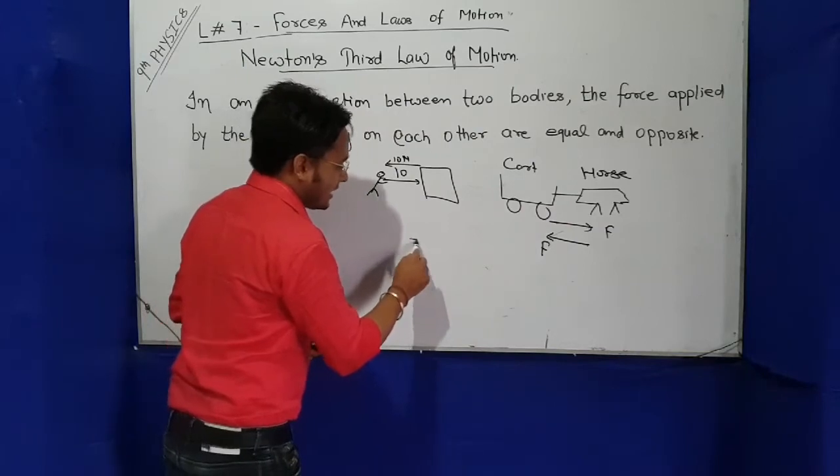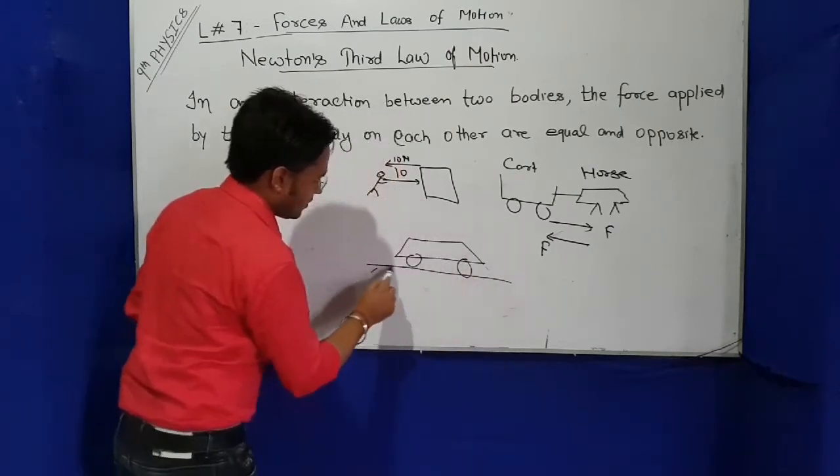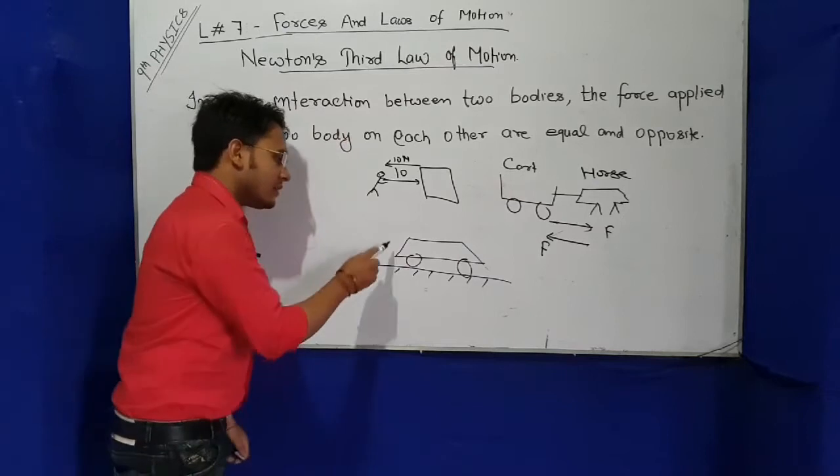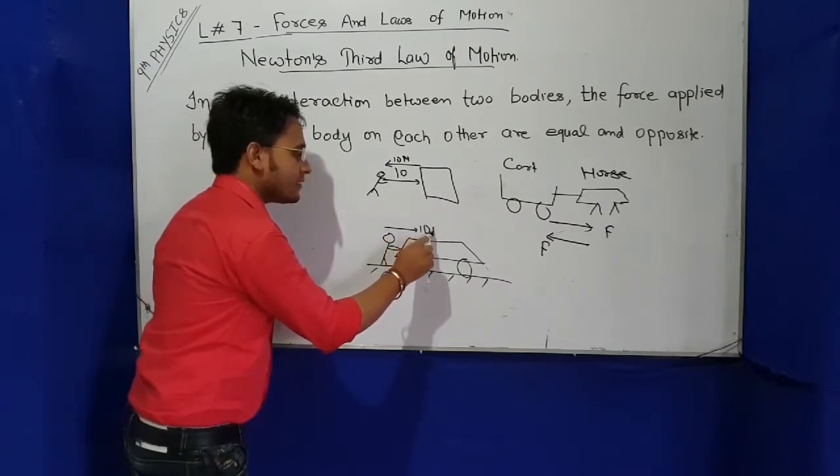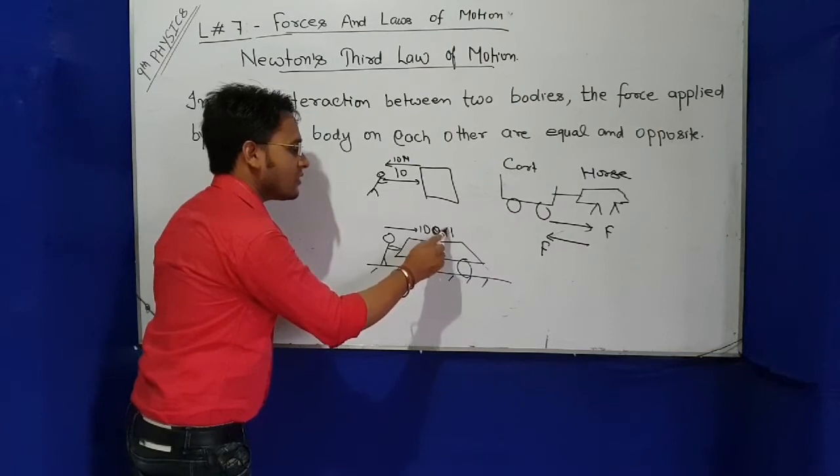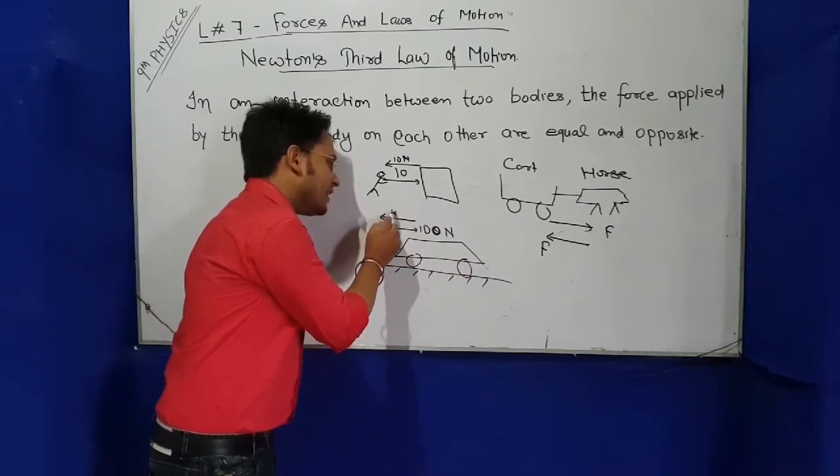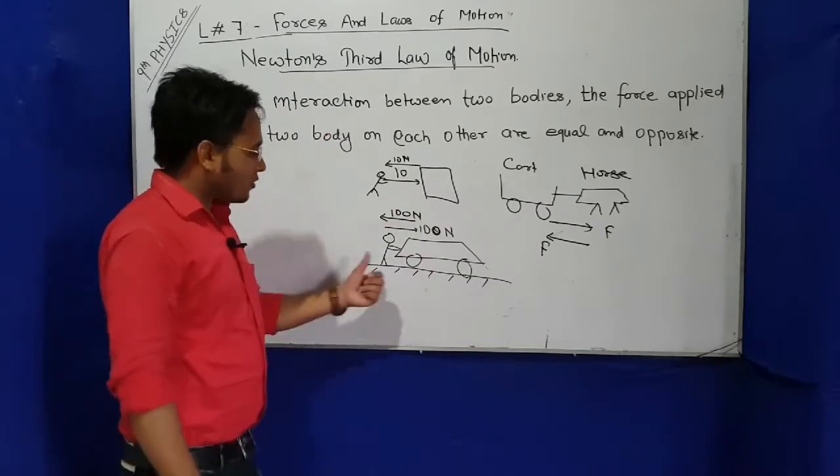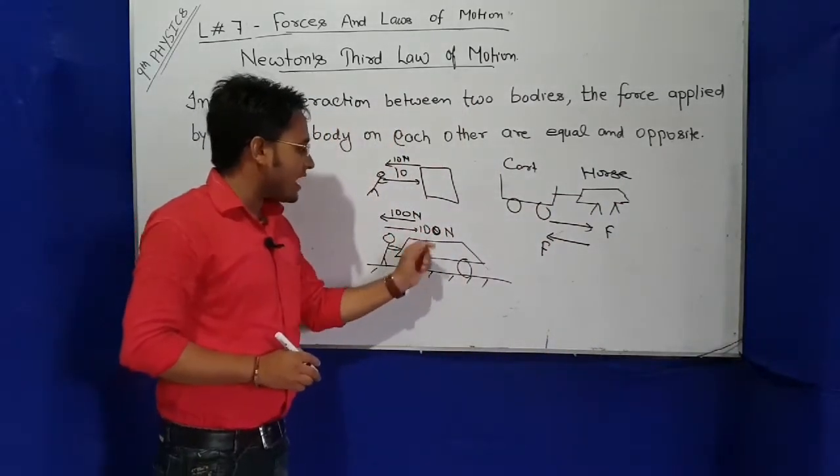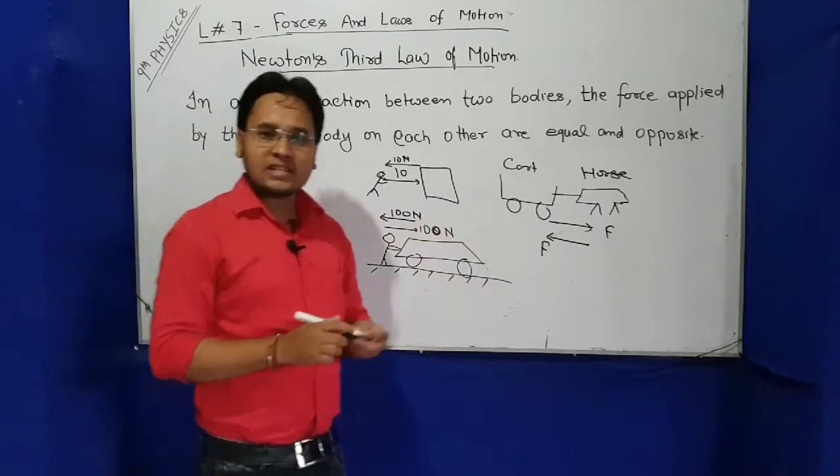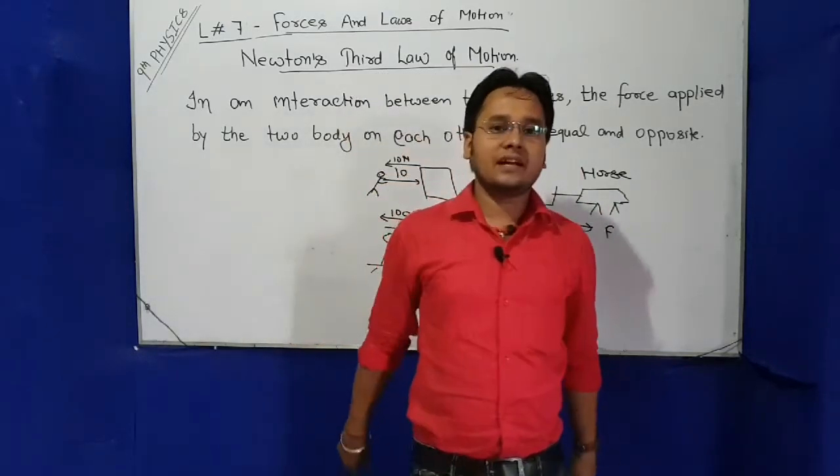Another example: suppose a car, and a boy pushes the car with 100 Newtons force. According to third law, the car also applies 100 Newtons force on the boy in opposite direction. Again the question is the same: then how does this car move? If 100 Newtons forward and 100 Newtons backward, then the car should not move.